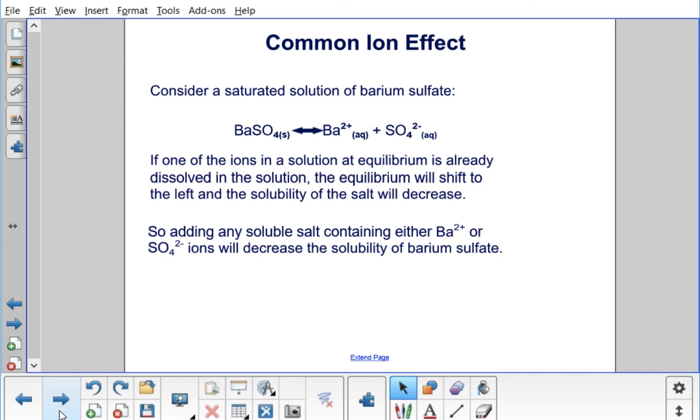So adding any soluble salt containing either barium or sulfate ions will decrease the solubility of the barium sulfate. This is known as the common ion effect which we discussed in great detail in our acid base equilibria.